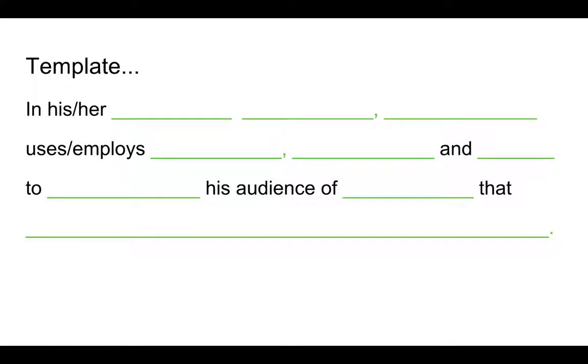So this is the template: In his or her blank blank blank uses/employs blank blank and blank to blank his audience of blank that blank. Great, that's really clear, isn't it? Okay, so what we're going to be doing is we're going to be filling in the different aspects of SOAPSTone into this template.